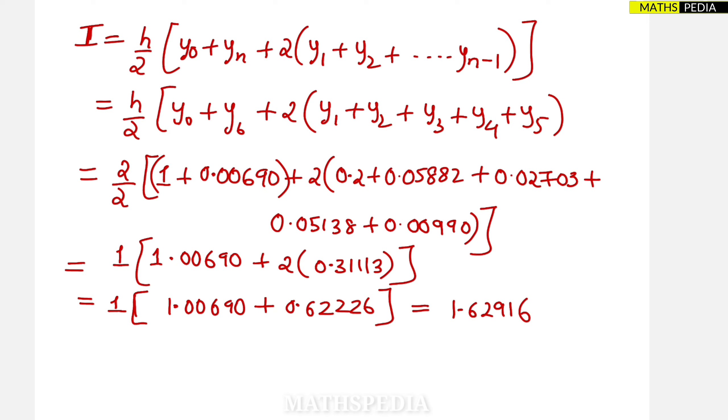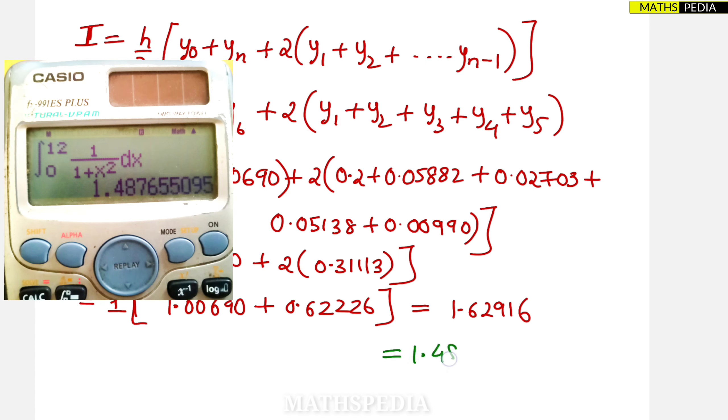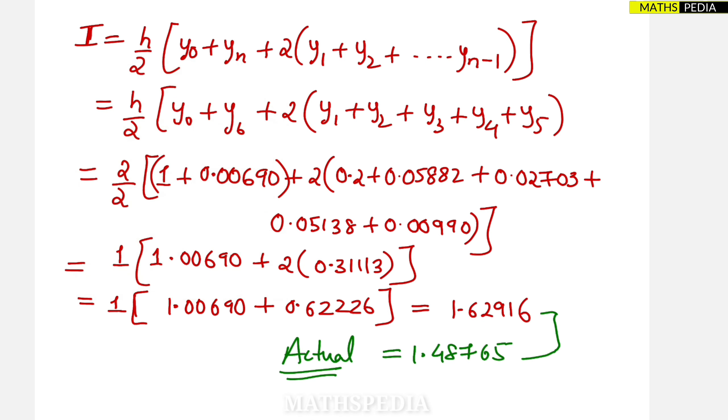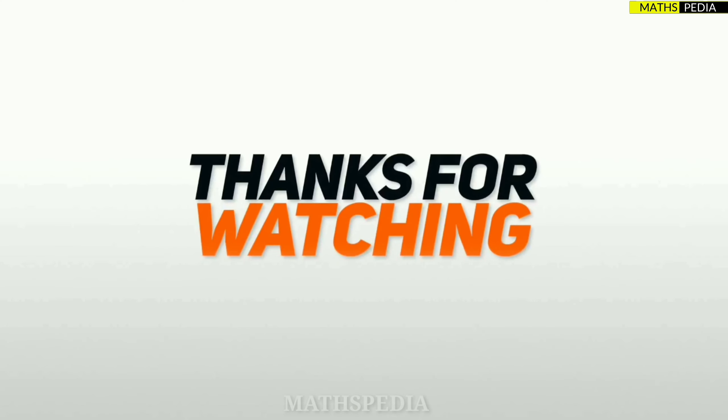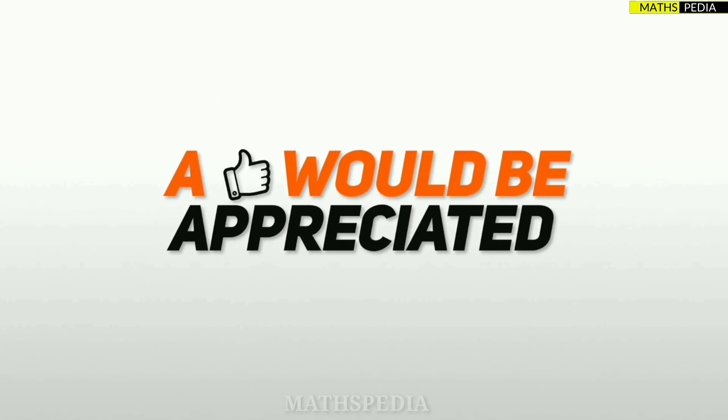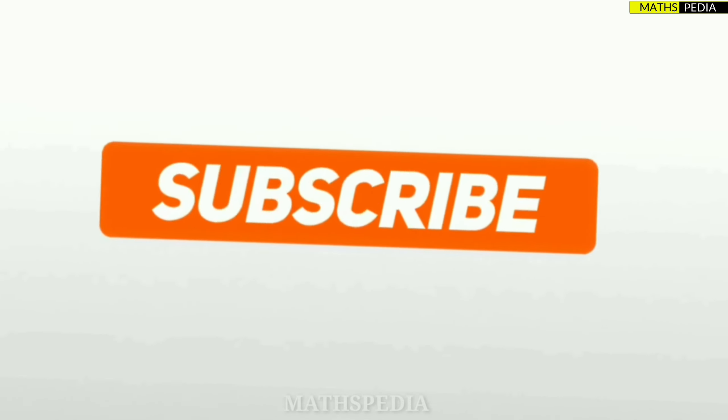But actual value, if you see, we will be arriving at actual value as 1.48765. This will be the actual value using the calculator or by upper limit minus lower limit. So that means you can see that there is quite a large amount of error occurring in this. So using other methods there will be slight amount of error, or maybe more than this error will occur. So we will try to identify that error.